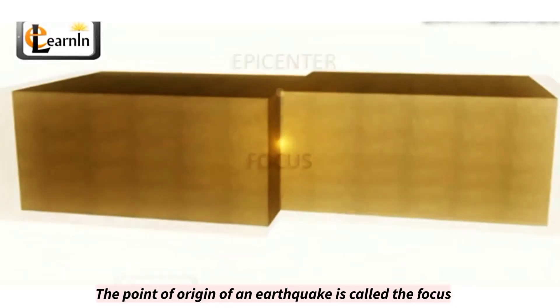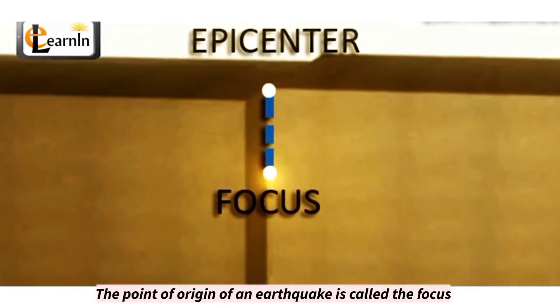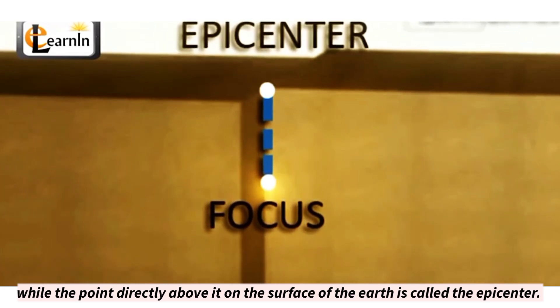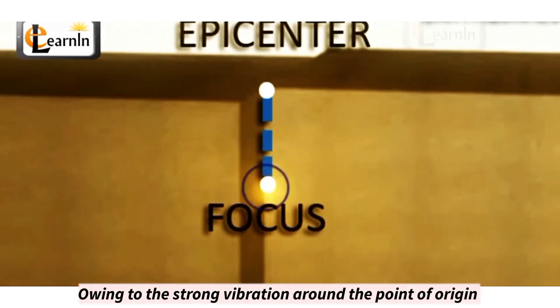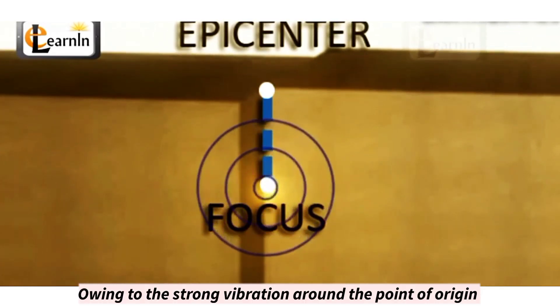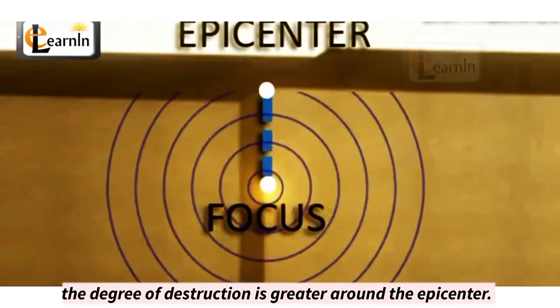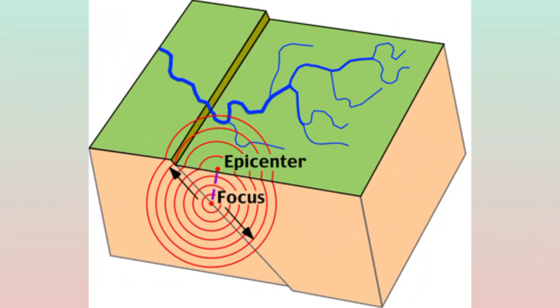The point of origin of an earthquake is called the focus, while the point directly above it on the surface of the Earth is called the epicenter. Owing to the strong vibration around the point of origin, the degree of destruction is greater around the epicenter.